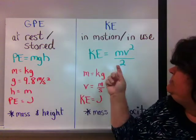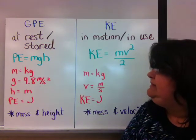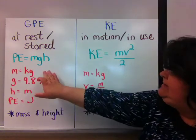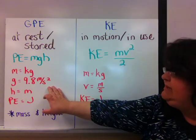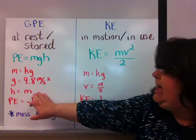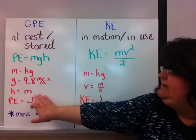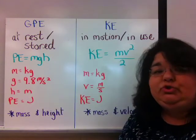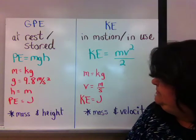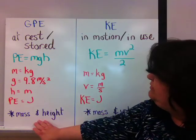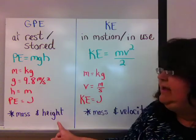We have two formulas here. Potential energy is mass times gravity times height. Mass is in kilograms. Gravity is 9.8 meters per second squared on Earth. And height will be measured in meters. When you multiply these values together, you will get a joule, J-O-U-L-E-S, joules. The important factors, then, for potential energy are mass and height.